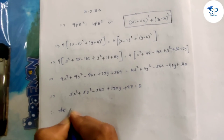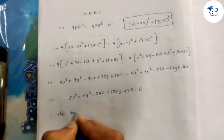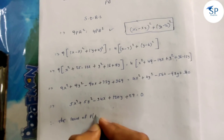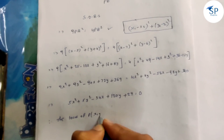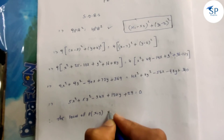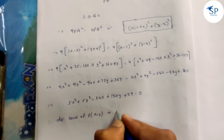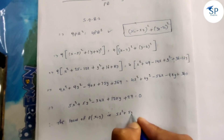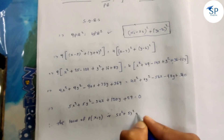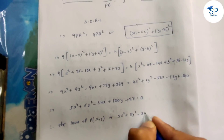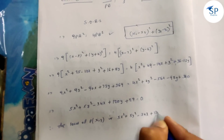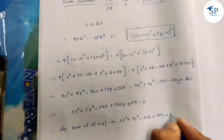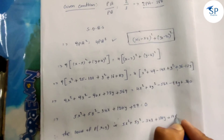The locus of the point P(x, y) is: 5x² + 5y² - 34x + 120y + 29 = 0.